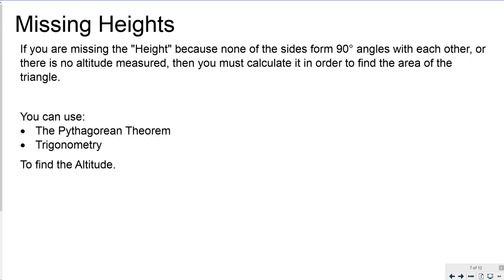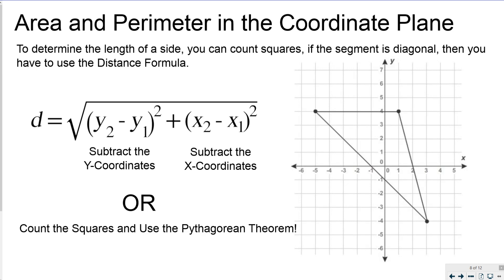One of the most important things we'll be doing is area and perimeter in the coordinate plane. Lots of times the problems that show up on the ACT involve area and perimeter of figures on a coordinate plane. You can use the distance formula to find missing heights.